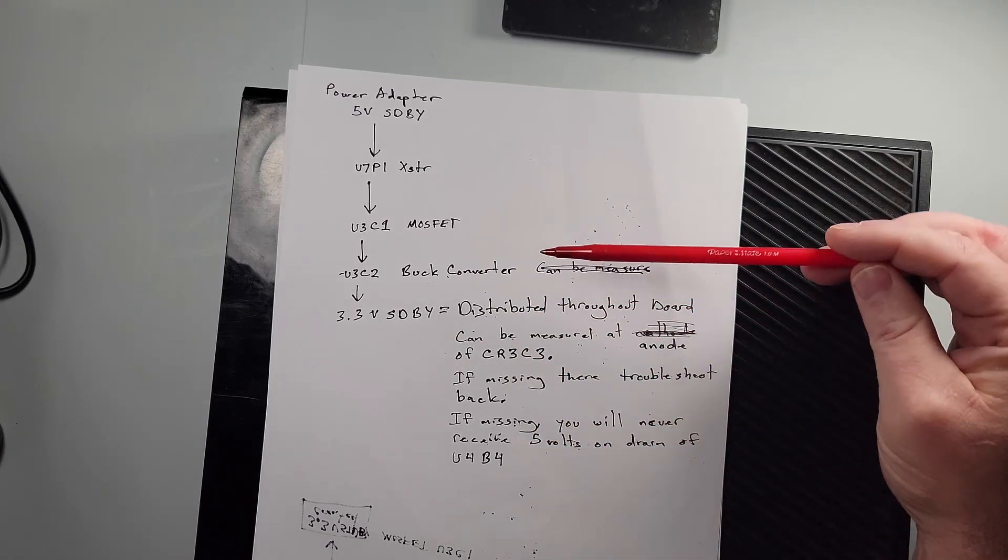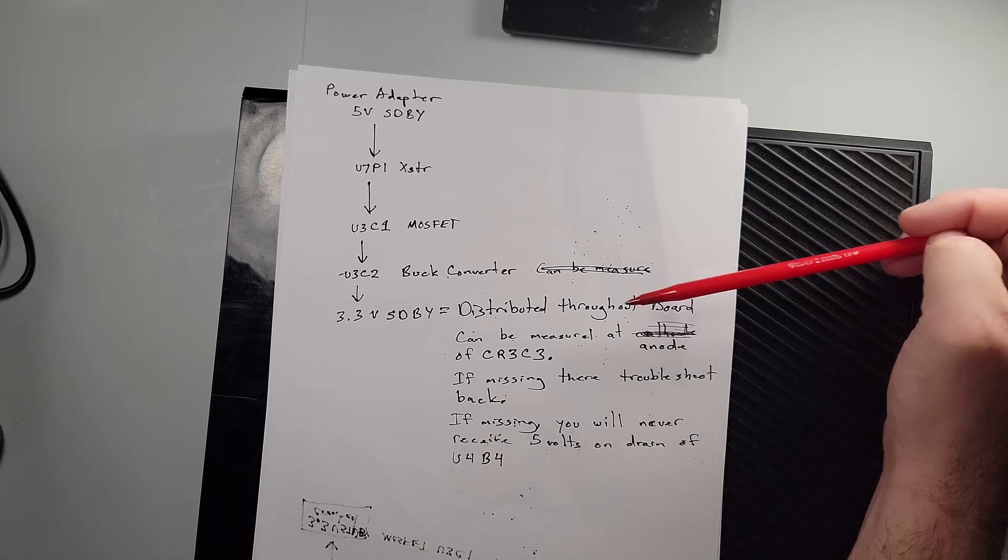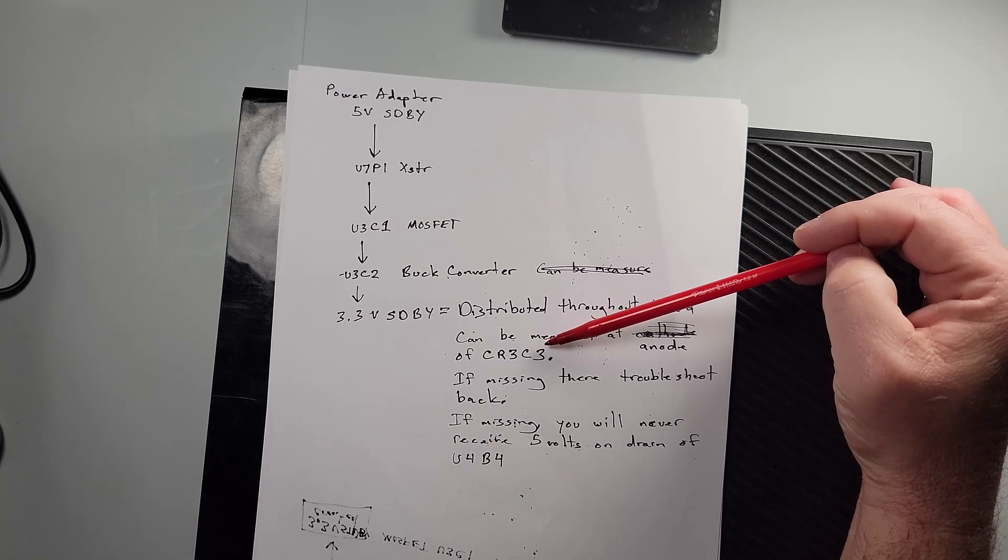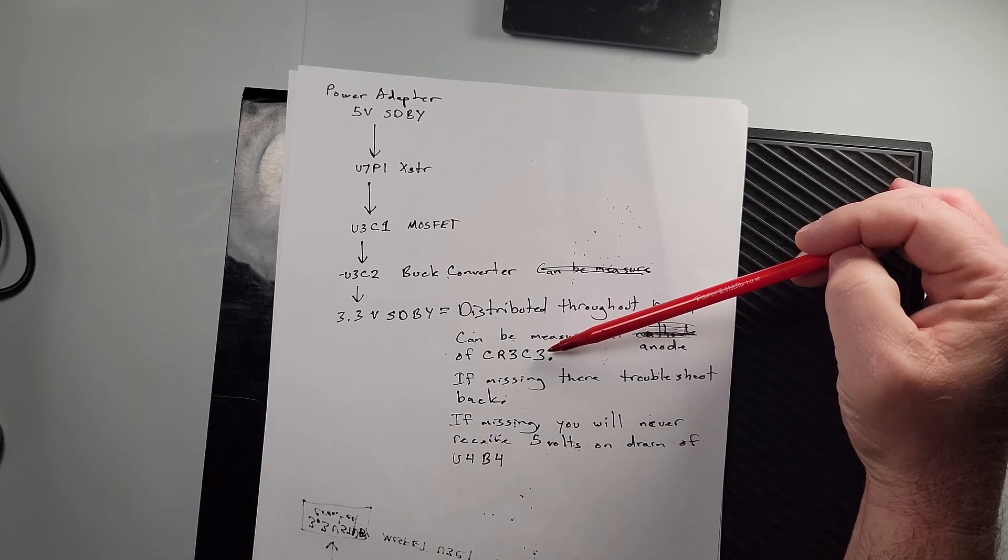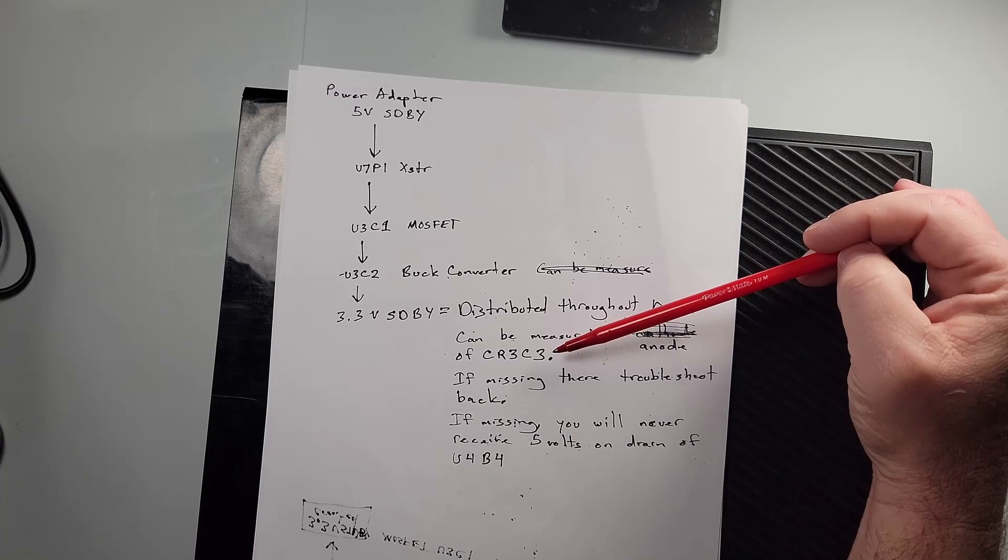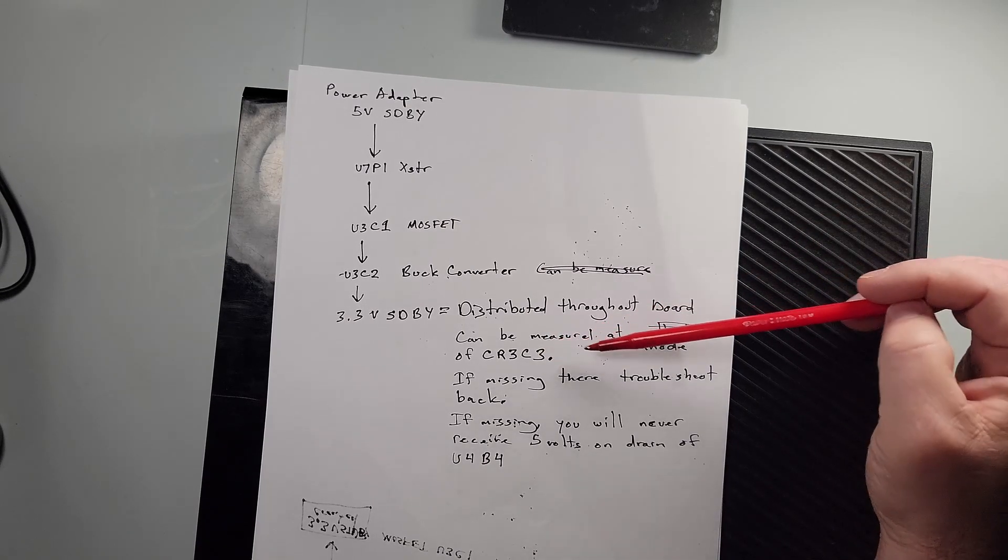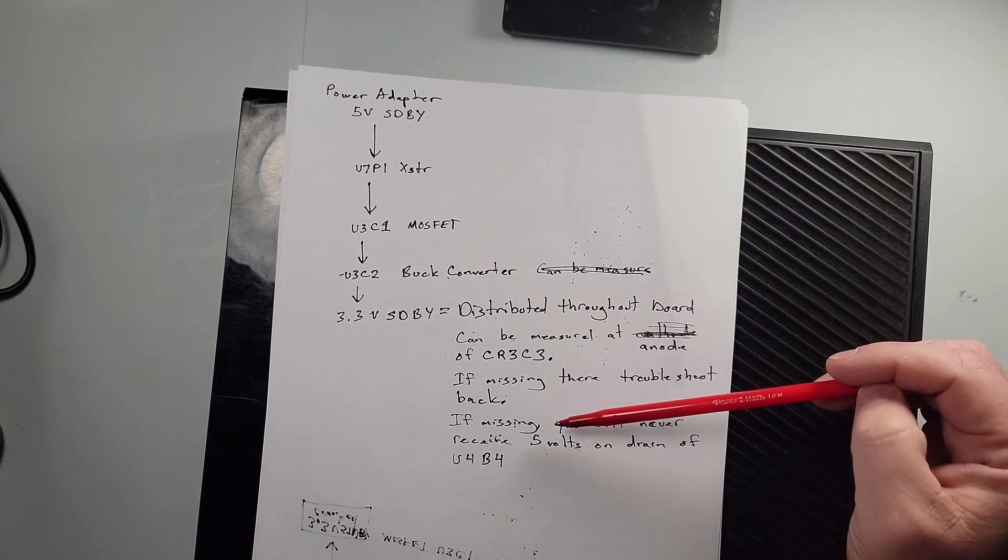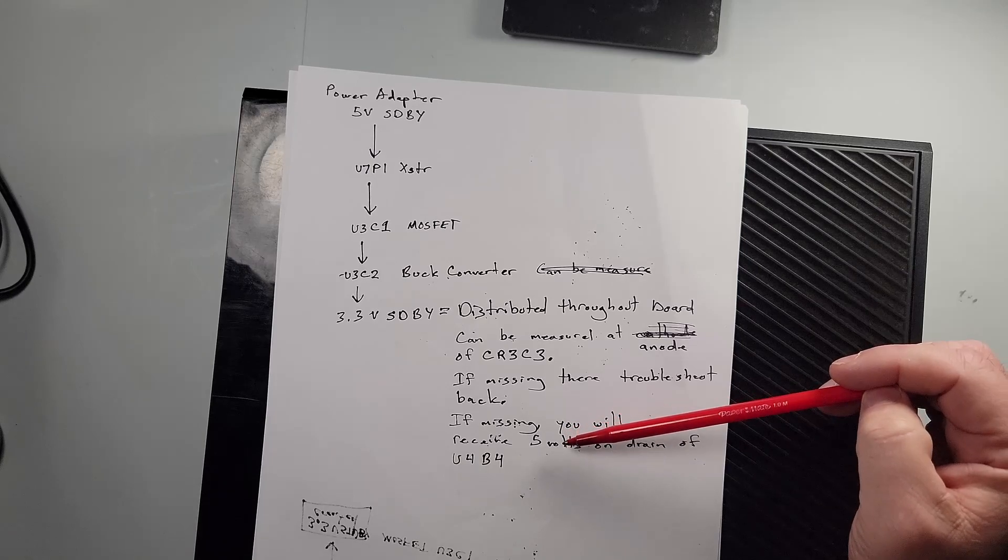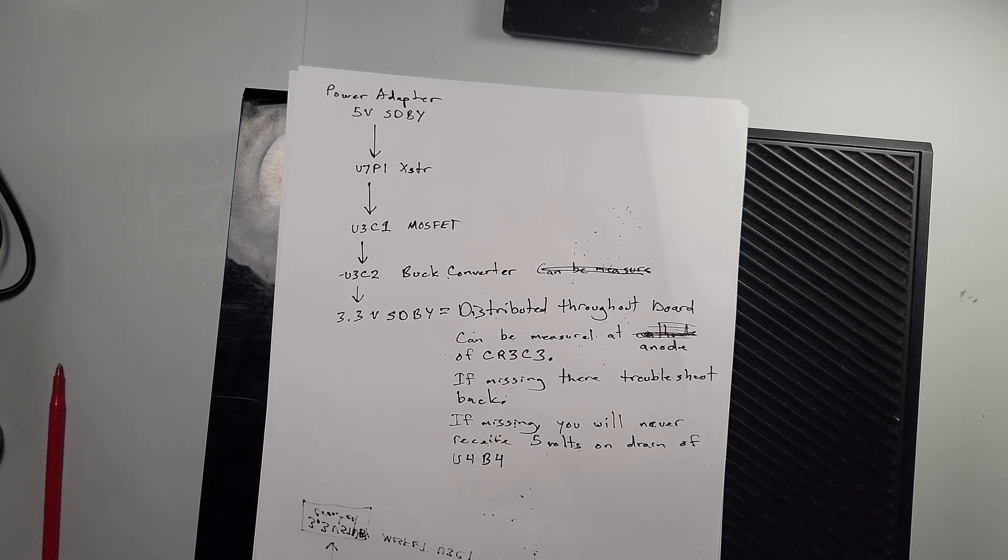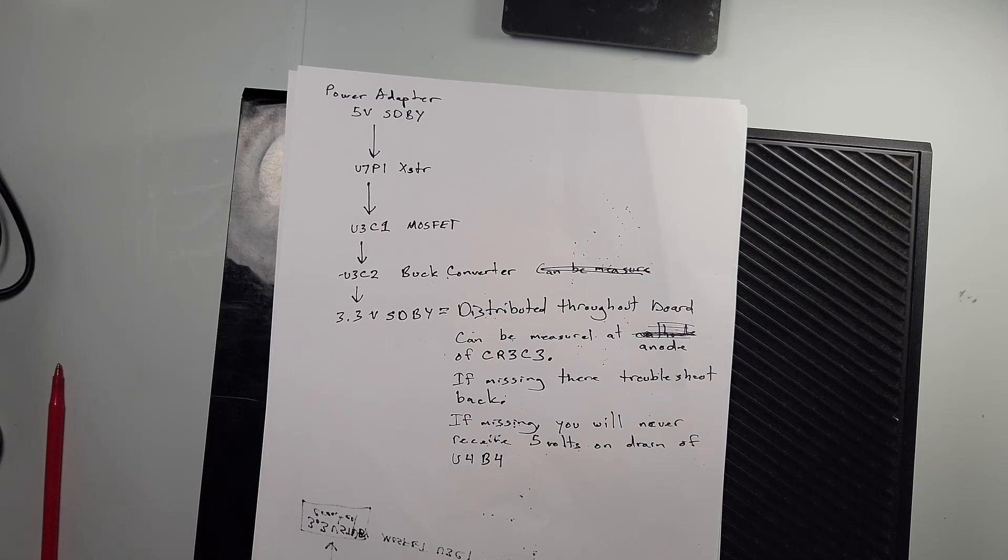So what I learned is that obviously it's distributed throughout the entire board. You can measure that 3.3 volt standby at the anode of CR3C3. If you do not get it at the anode of CR3C3, then you are not getting your 3.3 volt standby. You can measure 3.3 volts in other places, but if you're not getting it at the anode of here then you're not getting it. If it's missing then you need to troubleshoot back this path. If it's missing you'll never receive your 5 volts on the drain of U4B4, which is what the indication initially I found. I believe that's actually 5 volts power on. If you power on the console then you'll get 5 volts there. I could be wrong but those are just my observations and findings. And again if I'm wrong about anything please leave a comment and correct me. So I appreciate y'all watching.